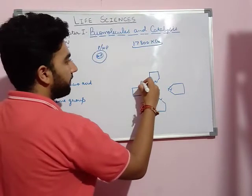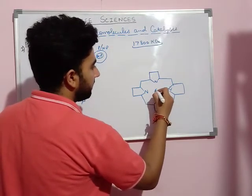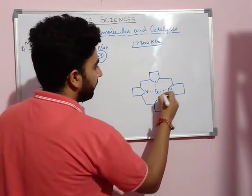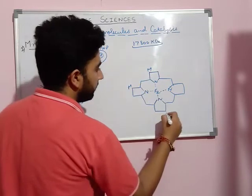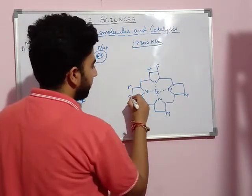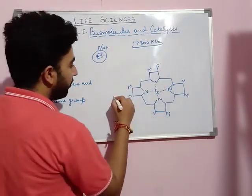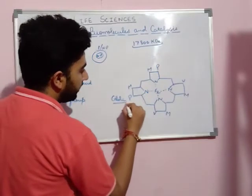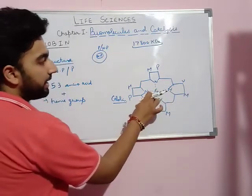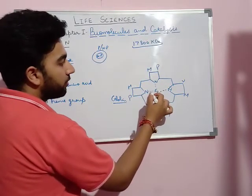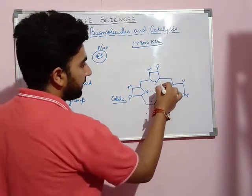These are the four porphyrin rings. This is the iron atom, and these are the four covalent bonds. This is the globin molecule, in which there are four porphyrin rings and the iron atom is attached in the center with the help of four coordinate bonds in a planar structure.